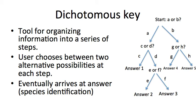We're going to start by talking about what a dichotomous key is and how it's organized. A dichotomous key is a tool for organizing information into a series of steps, and as the word dichotomous implies, a dichotomy is something with only two possibilities. So a dichotomous key organizes information into a series of questions that have only two answers. At each step the user chooses between those two alternative possibilities, and eventually the key brings you to the point where one of the choices will lead you to the identification — in our case, the species of twig you are looking at.